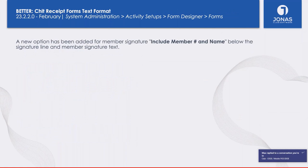For chit receipt text forms: in February 2023 release 220, we added the ability to include the member number and name below the signature line. For clubs that have moved to text forms supporting electronic signature, this means when a member signs they can confirm who they are — the member number and name appear near the signature line. Previously, they would have to look at the header at the top of the ticket, far from where they sign.